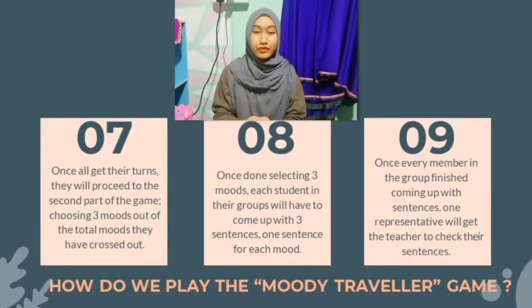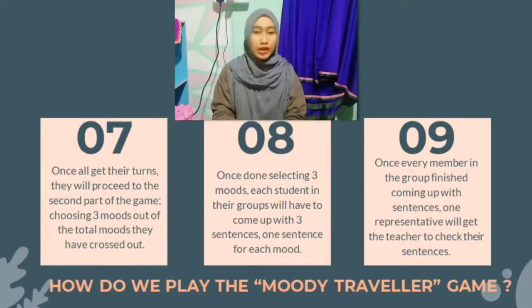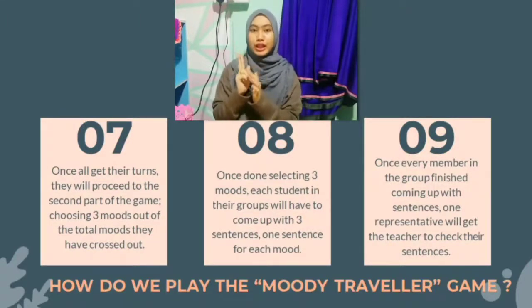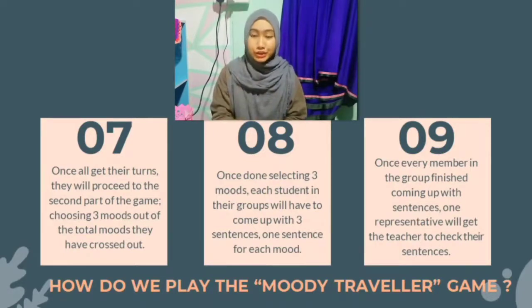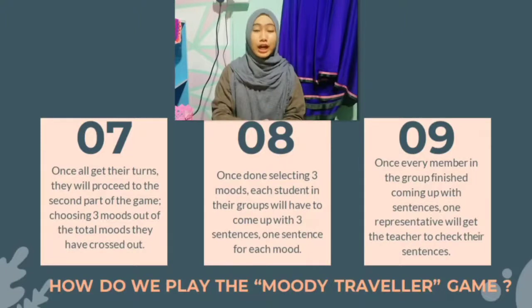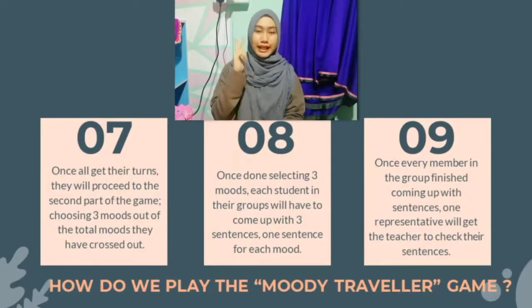Once the students in the group finish their turns, they will proceed to the second part of the game, which is to choose 3 out of the total moods they have crossed out in the puzzle. For example, if they have 5 moods crossed out, they will choose 3 of those moods to proceed to the second part. Once they have selected the 3 moods, each student in their respective groups will have to come up with 3 sentences — 1 sentence for each mood. For example, my group chose cool, joyful, and shy.